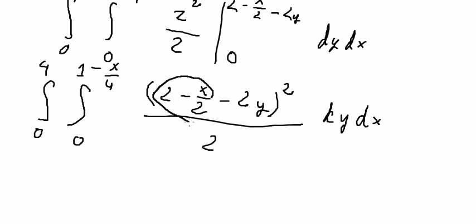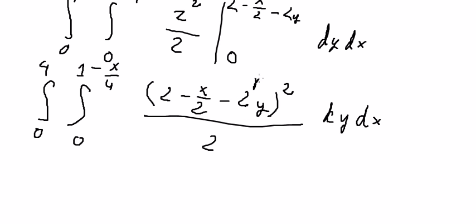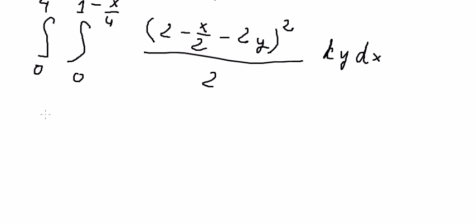We let this term be A and the other term be B, so we expand it as A minus B to the power of 2.